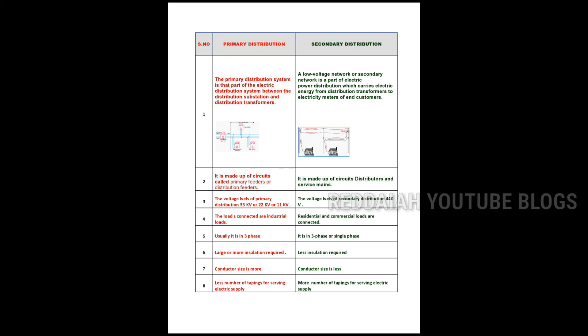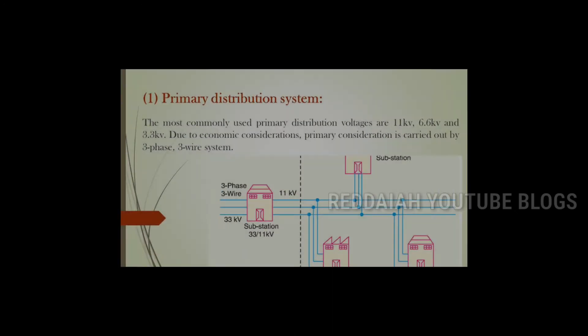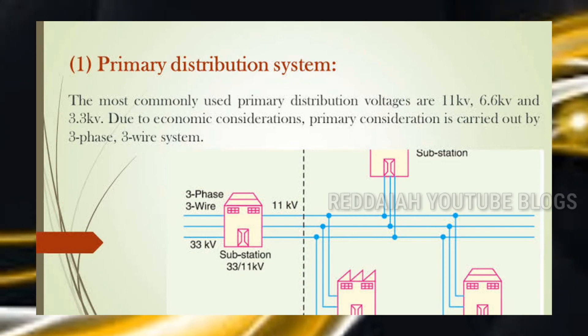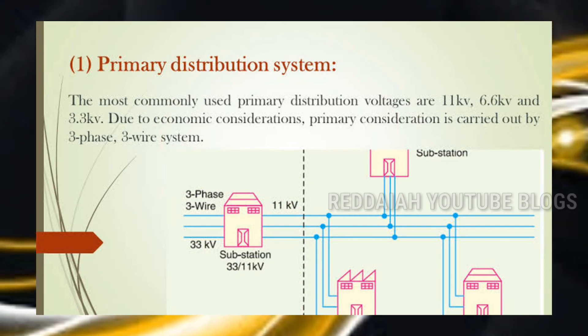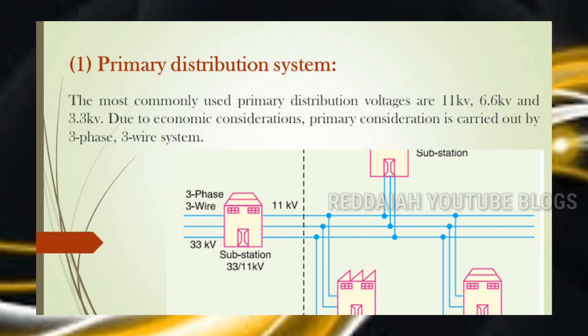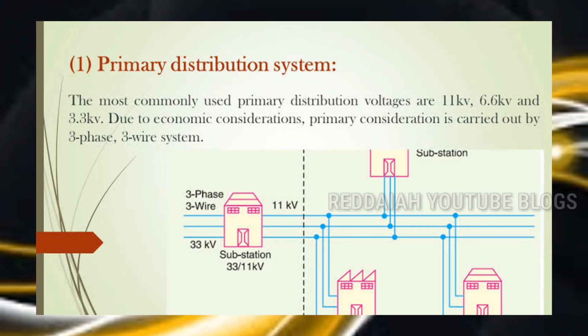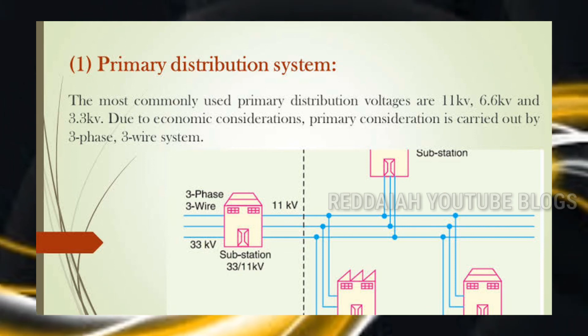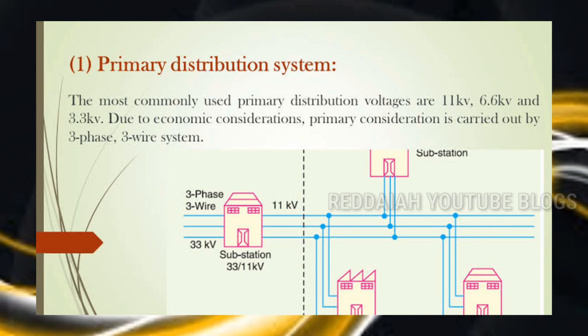The most commonly used primary distribution voltage levels are 11 kV and 3.3 kV due to economic considerations, and primary distribution is carried out on 3-phase 3-wire only.